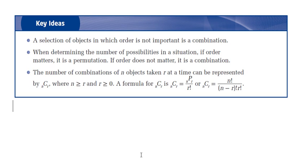All right. I'll just conclude this lesson by just showing you a summary of what we've learned here. The key ideas. A selection of objects in which order is not important is a combination. Two. When determining the number of possibilities in a situation, if order matters, it is a permutation. If order doesn't matter, it's a combination. And here is the formula for NCR. The number of combinations of N objects taken R at a time can be represented by this.